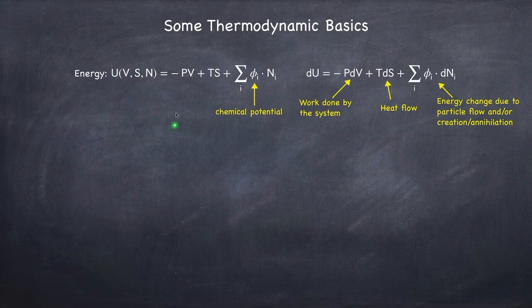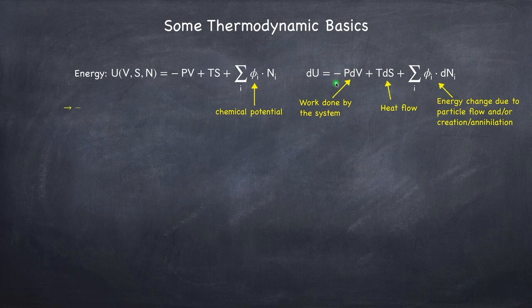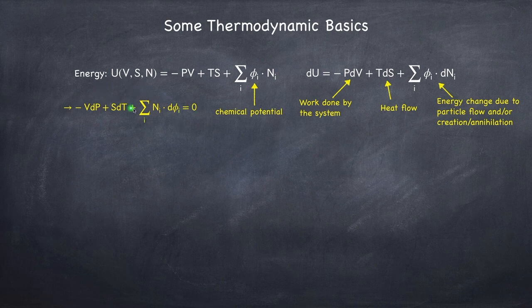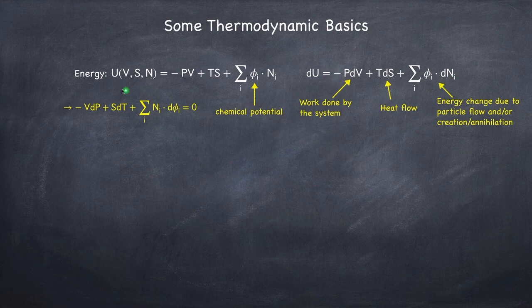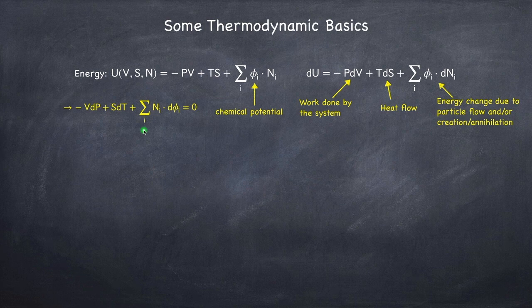Note that if we take the total derivative of the energy to get the energy change, there are missing terms, and so that implies that this sum here must equal zero. These are the missing terms from when we take the total derivative of the energy that are not found in the equation for the net change in energy. This doesn't come up that often, but it's actually a good relation to have in your back pocket as it can be useful.